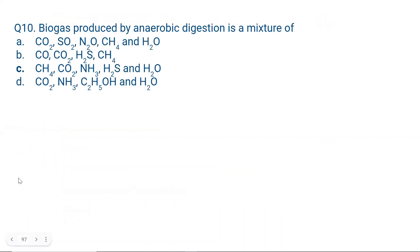Final question: Biogas produced by anaerobic digestion is a mixture of — A. CO2, SO2, N2O, CH4, and H2O; B. CO, CO2, H2S, and CH4; C. CH4, CO2, NH3, H2S, and H2O; D. CO2, NH3, C2H5OH, and H2O. The correct option is C — CH4, CO2, NH3, H2S, and H2O — as methane is the biggest factor in biogas and all these compounds are formed by anaerobic decomposition of matter.